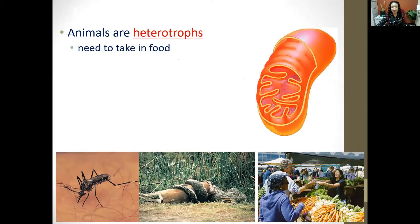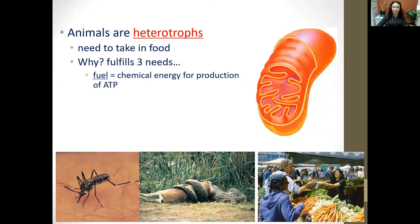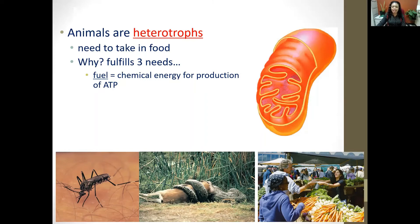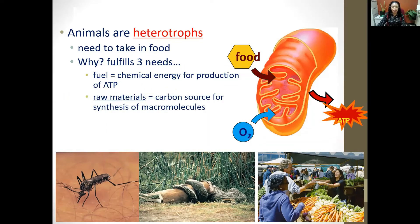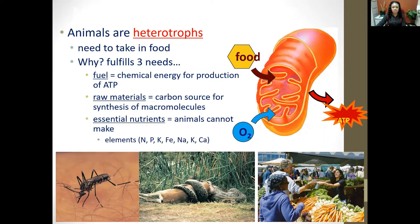Animals are heterotrophs, which means they need to take in food. Food is essentially fuel — just like a car needs gas to run, your body needs food to do work. This food is converted into energy in the form of ATP, adenosine triphosphate, which cells use to carry out the different characteristics of life. Food also provides raw materials and a carbon source for synthesis of macromolecules, as well as essential nutrients like iron, sodium, potassium, calcium, and nitrogen.